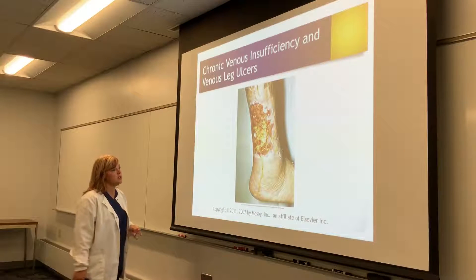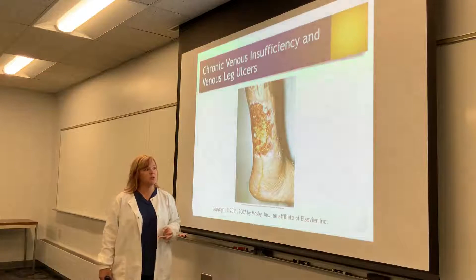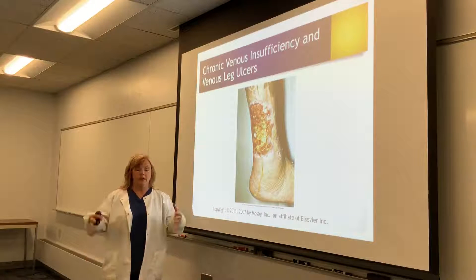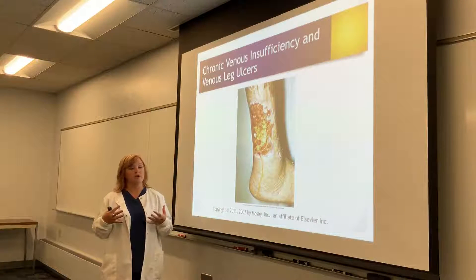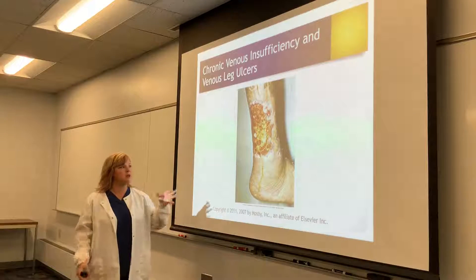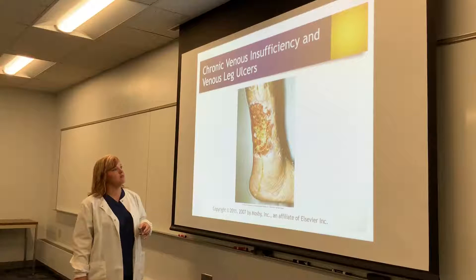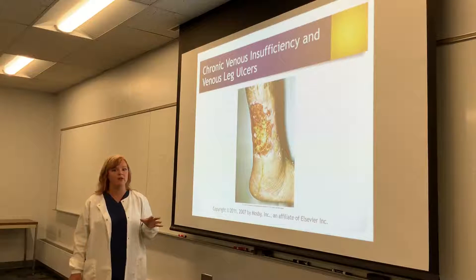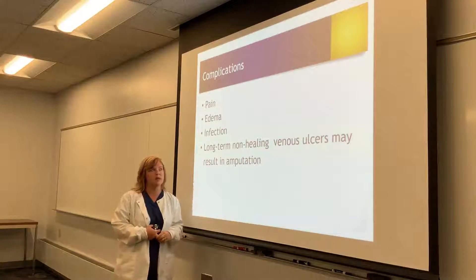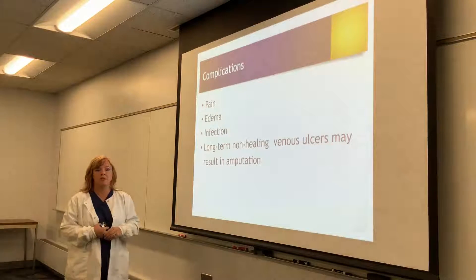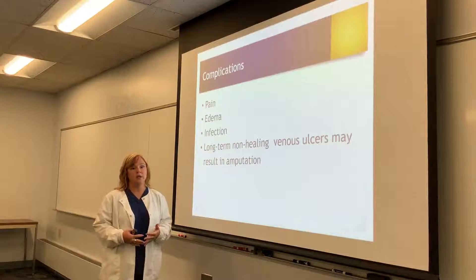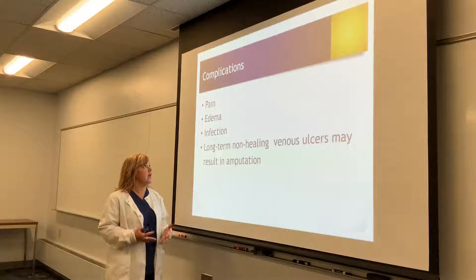Moving on to venous insufficiency — patients will often have swelling in the lower extremity. Because of all that swelling and the inability for the venous system to move blood back to the heart, you're going to see venous ulcers. Venous ulcers are usually more on the ankle area and lower extremity — they're red and look different from the necrotic ulcers of peripheral artery disease. Complications include pain, lower extremity edema making it difficult to get shoes on, potential self-image issues, and risk for infection.